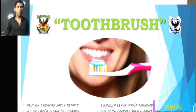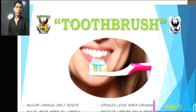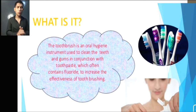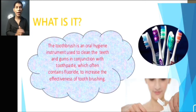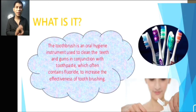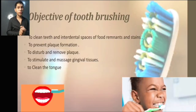Everyone knows about the toothbrush and everyone knows the benefits of a toothbrush. So the basic question is: what is it? A toothbrush is an oral hygiene instrument used to clean the teeth and gums. The toothbrush is often used with toothpaste to increase the effectiveness of tooth brushing. There are more similar points on my PPT about the object of the toothbrush.